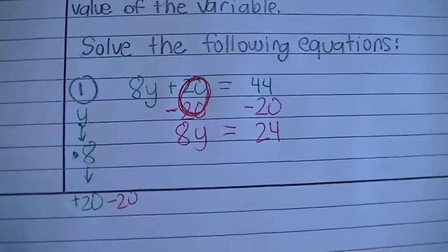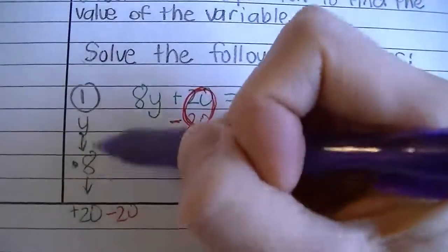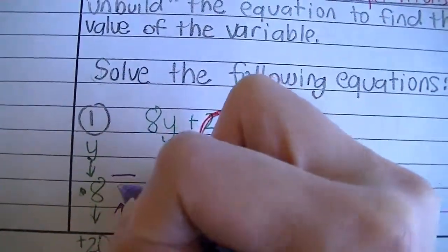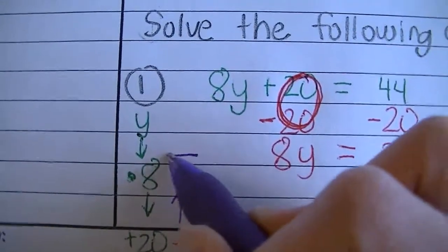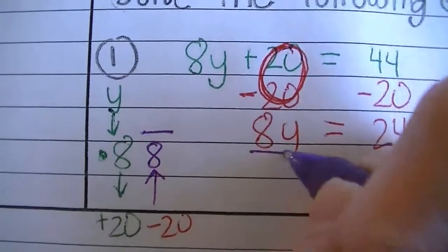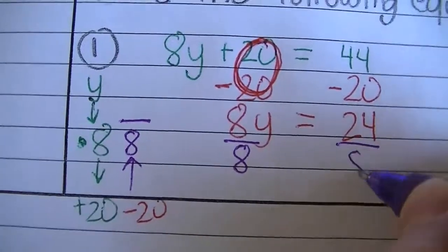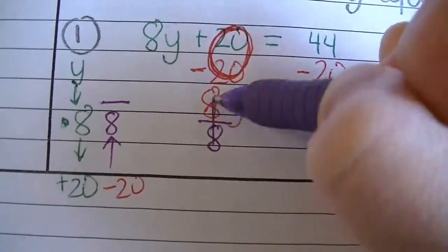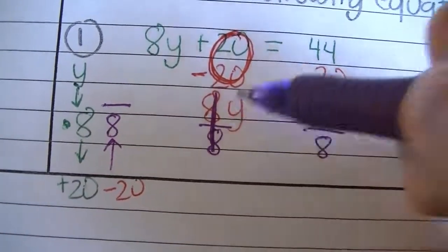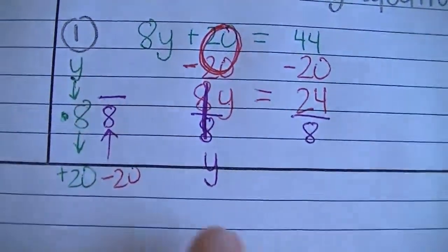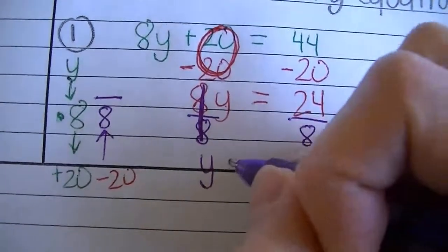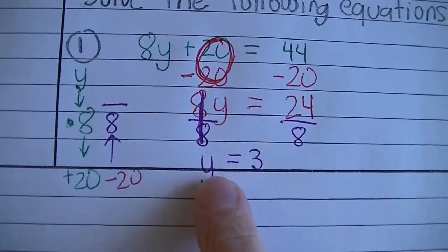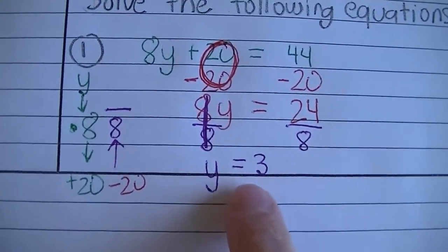Now that you've rewritten it, go back up this little ladder. The inverse operation of multiply is to divide, so you're going to divide both sides by 8. So I'm going to divide by 8 over here and divide by 8 over here. 8 divided by 8 is 1. 1 times y is 1y, but you can just write y because there's only one y. Bring down your equal sign. 24 divided by 8 is 3. So now that we have just y equals 3, that's going to be my answer.